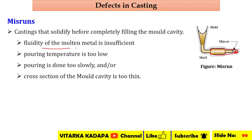The reasons for misruns are: insufficient fluidity of the molten metal, low pouring temperature, pouring done too slowly, and the cross-section of the mold being too thin. These are the various reasons how misruns occur in the mold cavity.